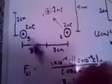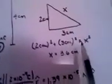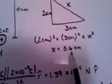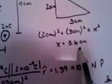That these two charges exert on this one. You're going to start by finding the distance from this charge to this charge. This is a simple Pythagorean theorem problem. You're going to find that distance to be 3.6 centimeters.